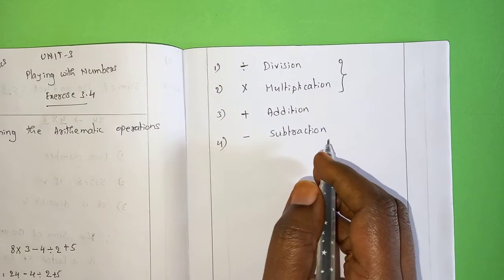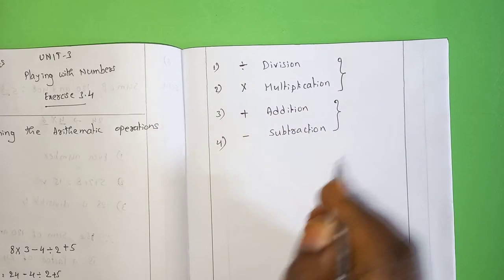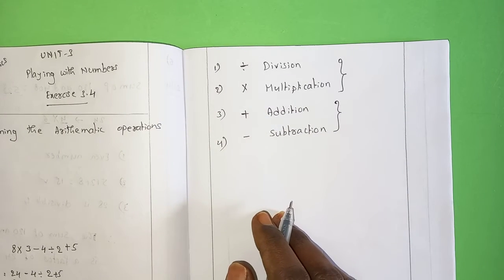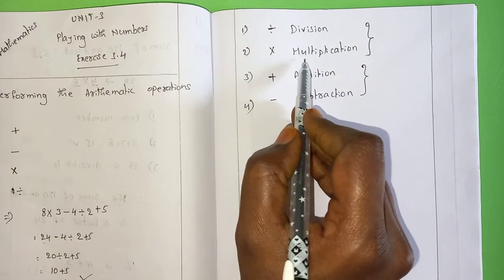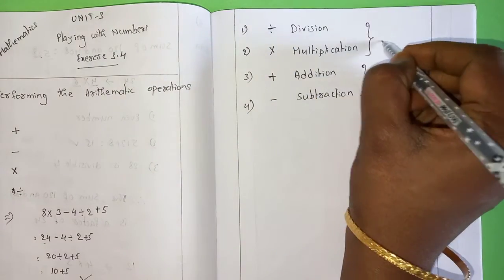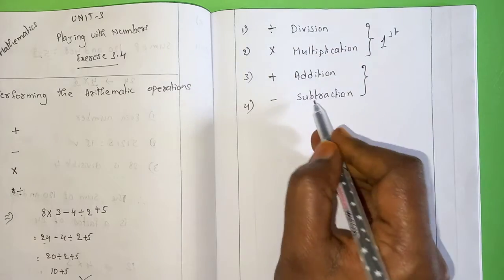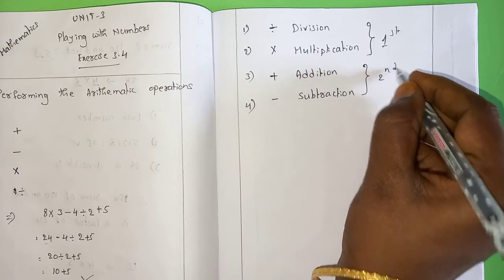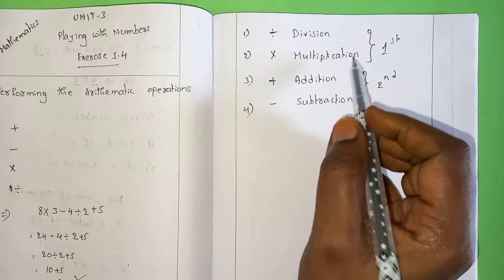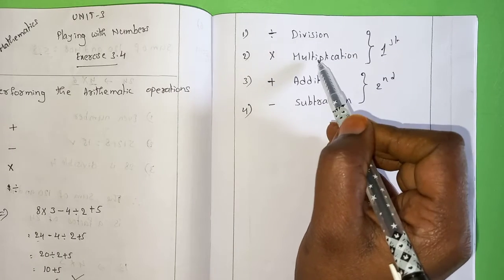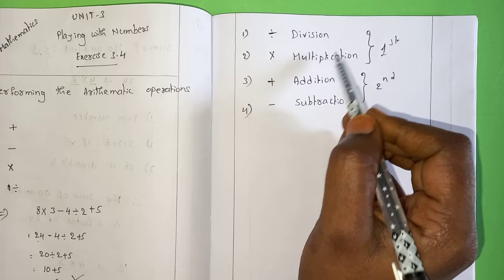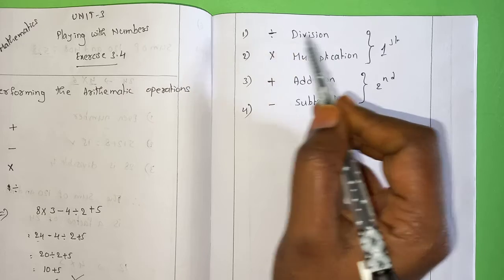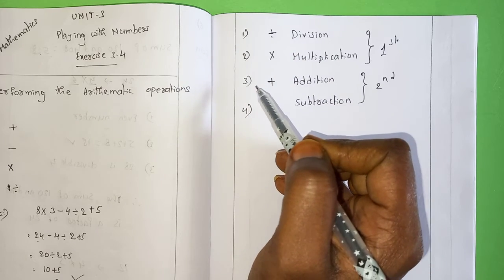Multiplication and division have the first priority; addition and subtraction have the second priority. Division and multiplication have the highest priority; addition and subtraction have the second highest priority. When you have a situation with both division and multiplication together, do the division first.